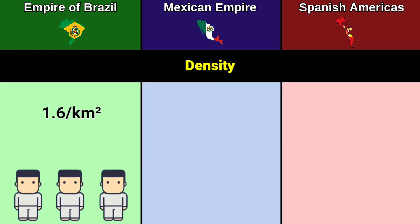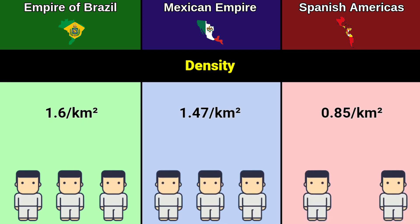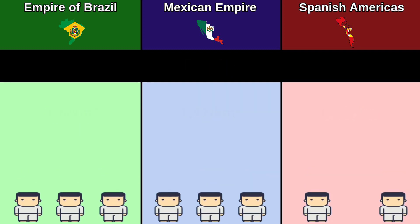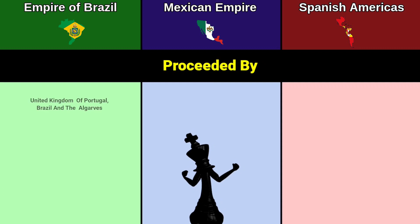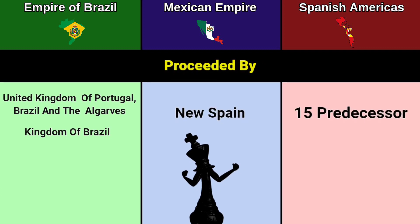Density: 1.6 per square kilometer, 1.47 per square kilometer, 0.85 per square kilometer. Preceded by: United Kingdom of Portugal, Brazil and the Algarves, Kingdom of Brazil, New Spain, 15 predecessors.